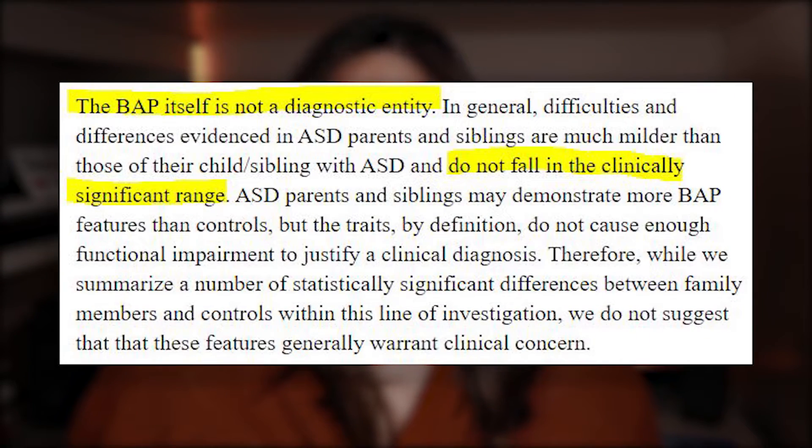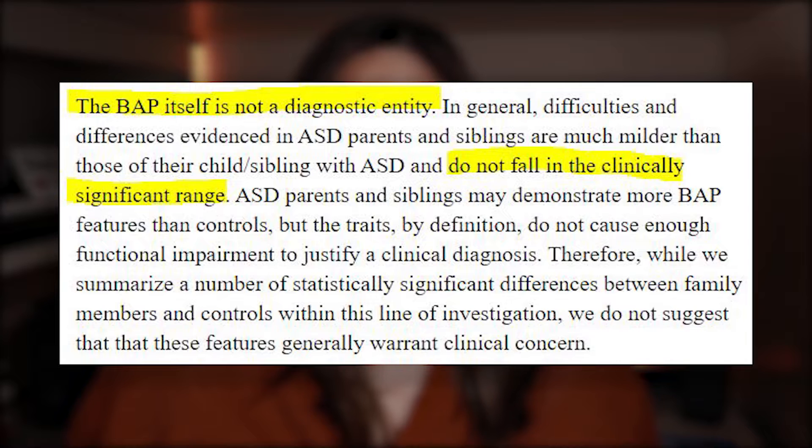This paper makes something clear: the BAP itself is not a diagnostic entity. In general, difficulties and differences evidenced in ASD parents and siblings are much milder than those of their child or sibling with ASD and do not fall in the clinically significant range. ASD parents and siblings may demonstrate more BAP features than controls, but the traits by definition do not cause enough functional impairment to justify a clinical diagnosis. This concept existed before the 2013 change of the DSM, which resulted in the DSM-5 and put Asperger's and other conditions on the autism spectrum under one diagnosis.